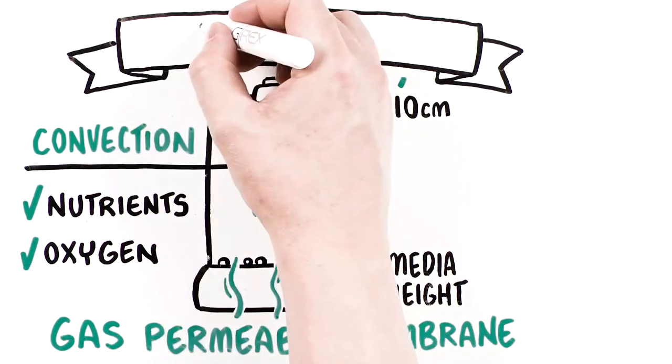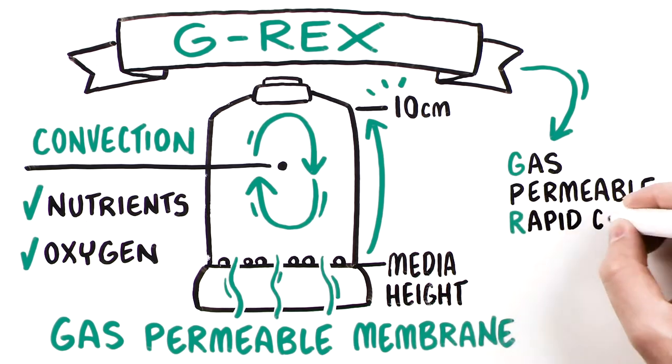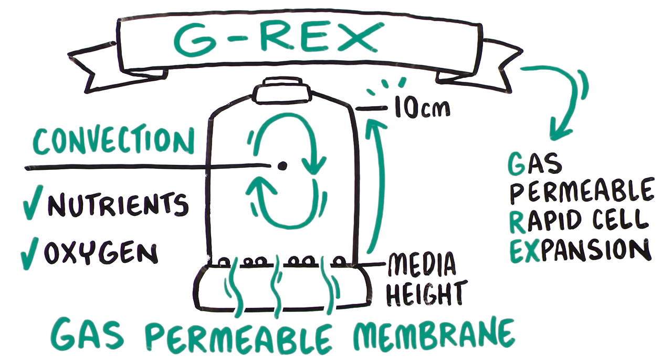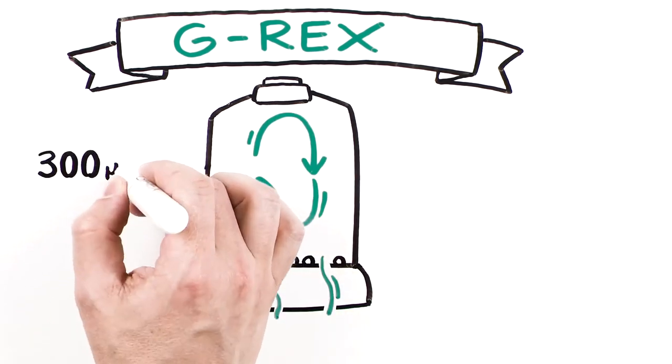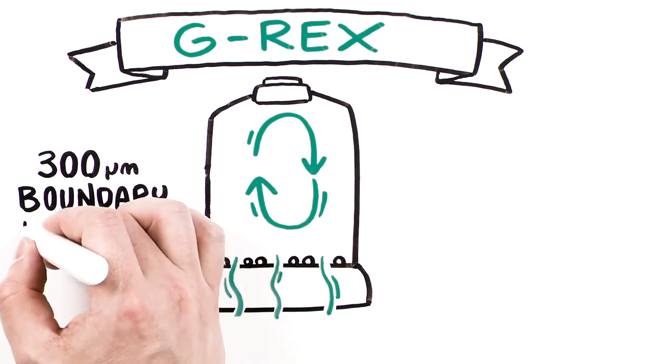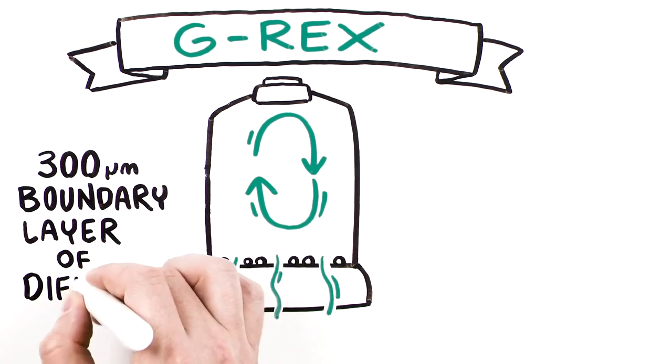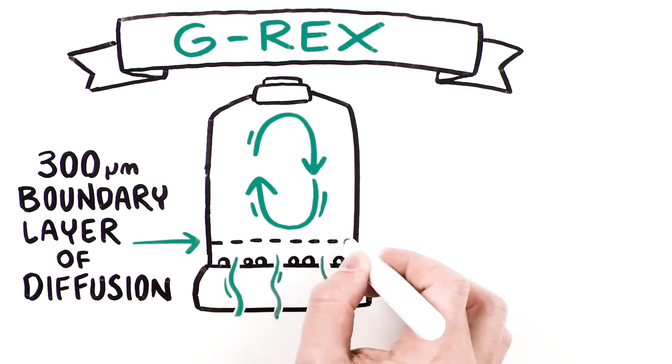This discovery is called G-REX, gas-permeable rapid cell expansion. Wilson-Wolf also discovered that a 300-micron boundary layer, a property of fluid dynamics, forms a quiet area inside G-REX directly above the gas-permeable membrane.